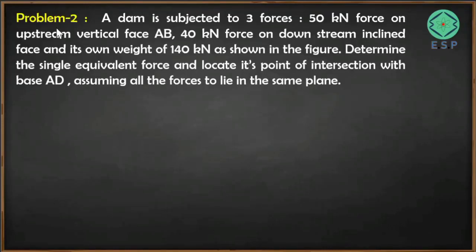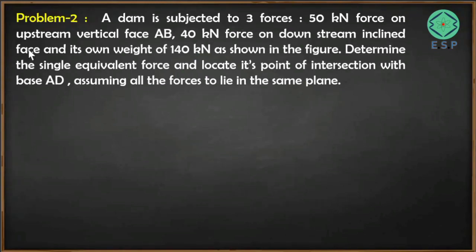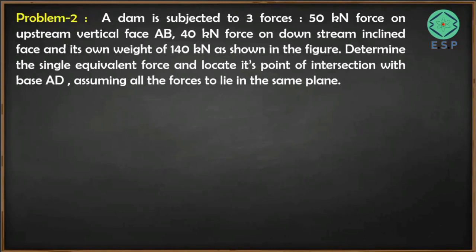We have a problem based on coplanar non-concurrent forces. Let me read the question first. A dam is subjected to three forces: a 50 kN force on the upstream vertical face AB, a 40 kN force on the downstream inclined face, and its weight of 140 kN as shown in the figure.